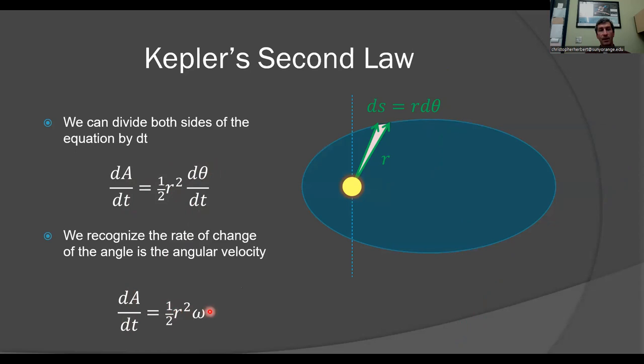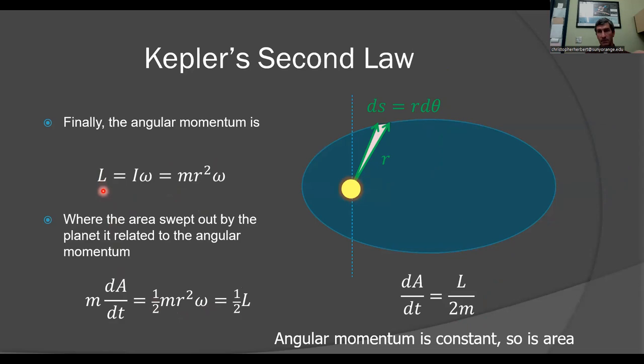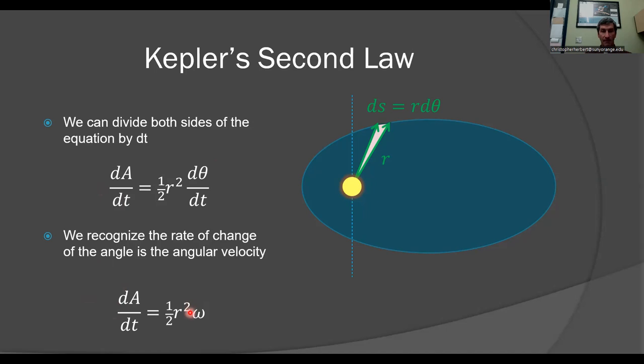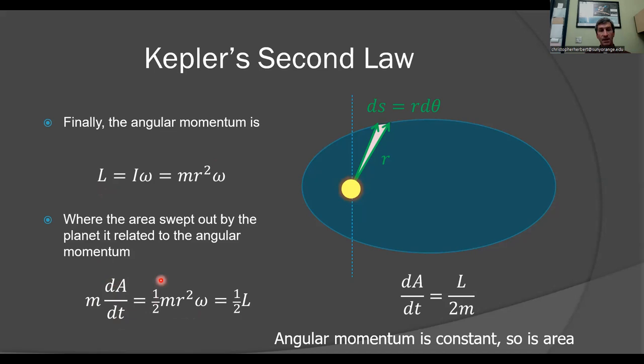If we're taking another definition of angular momentum, the magnitude of the angular momentum is I times omega. The moment of inertia for a mass around some central point is MR squared. Multiplying both sides by M, I get MDA DT is equal to one half MR squared omega, which is equal to one half L. L is the angular momentum. If the angular momentum is constant, DA DT must also be constant. That's just a more in-depth proof showing the same thing.